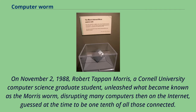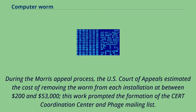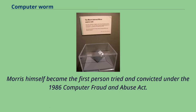On November 2, 1988, Robert Tappan Morris, a Cornell University computer science graduate student, unleashed what became known as the Morris worm, disrupting many computers then on the internet — guessed at the time to be one-tenth of all those connected. During the Morris appeal process, the U.S. Court of Appeals estimated the cost of removing the worm from each installation at between $200 and $53,000. This work prompted the formation of the CERT Coordination Center and Phage mailing list. Morris himself became the first person tried and convicted under the 1986 Computer Fraud and Abuse Act.